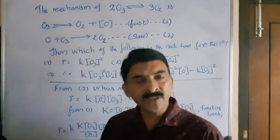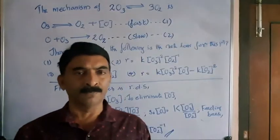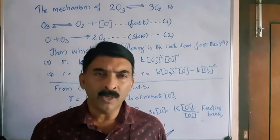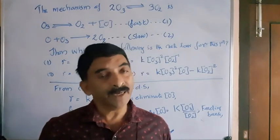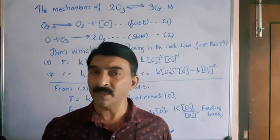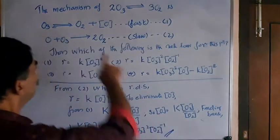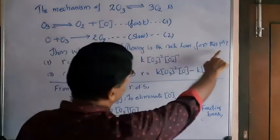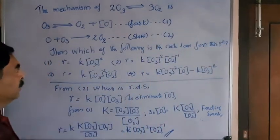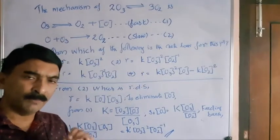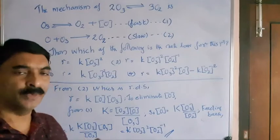So the slow step is the rate determining step. Agreed. So whenever we write the rate law, it is based on the rate determining step. We have to look into the rate determining step to write the rate law. So by looking at which of the following is the rate law for this reaction, we have given 4 different rate laws. We have to choose the correct rate law.